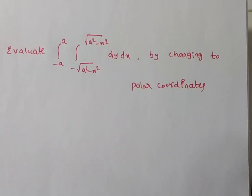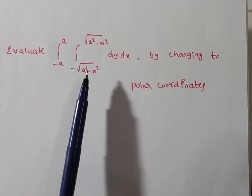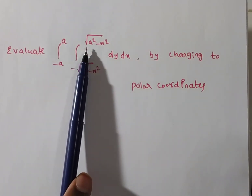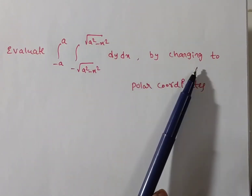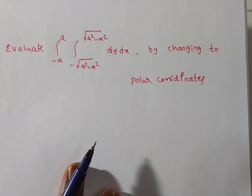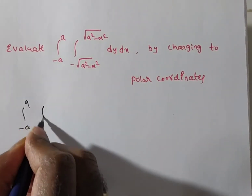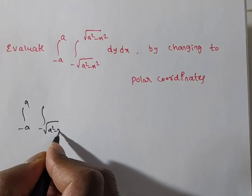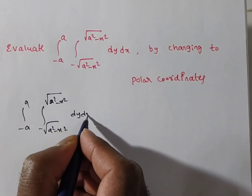Friends, in this video we are solving a problem on multiple integrals. The given problem is: evaluate the integral from minus a to a, and from minus square root of (a squared minus x squared) to plus square root of (a squared minus x squared), dy dx, by changing into polar coordinates.